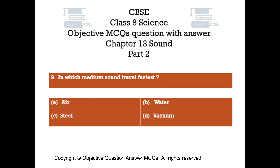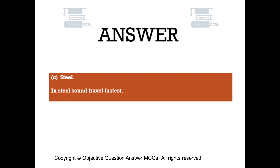Question number 9. In which medium does sound travel fastest? Option A: Air. Option B: Water. Option C: Steel. Option D: Vacuum. The right answer is option C — Steel. In steel, sound travels fastest.